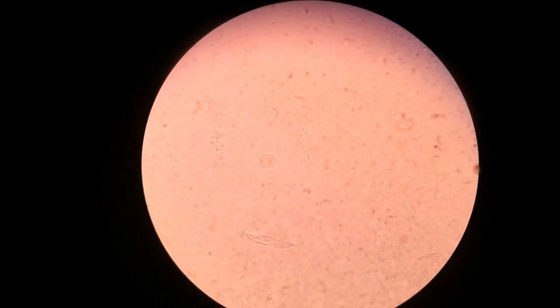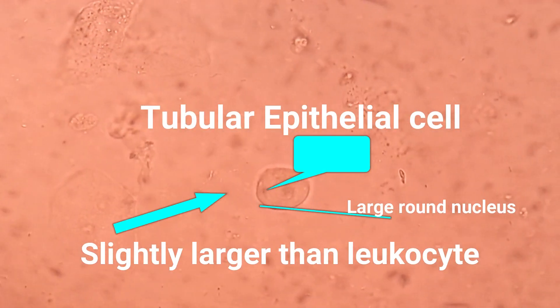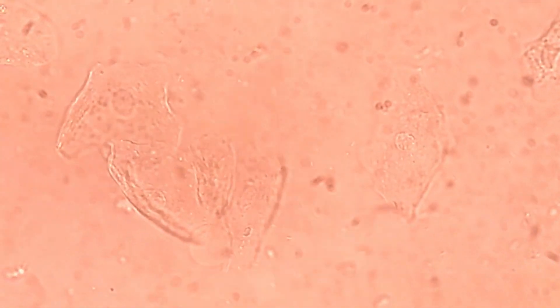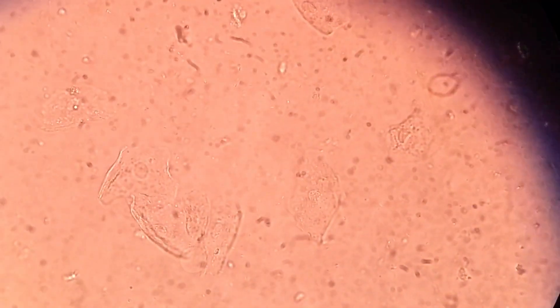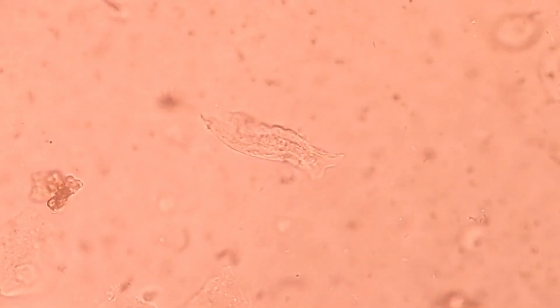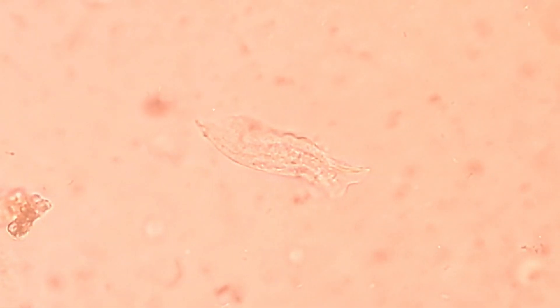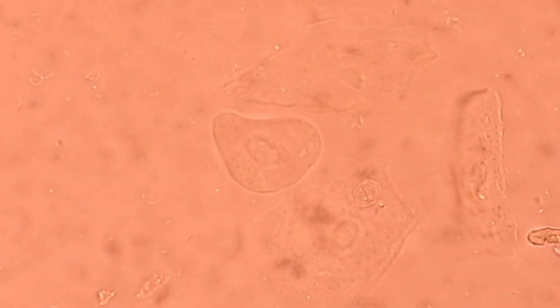A variety of epithelial cells can be found in urine under the microscope. These cells may originate from any site in the genitourinary tract, from the proximal convoluted tubule to the urethra, or from the vagina. Three to five cells per high power field are generally considered normal, and cells from these sites can be found in urine due to sloughing of old cells.